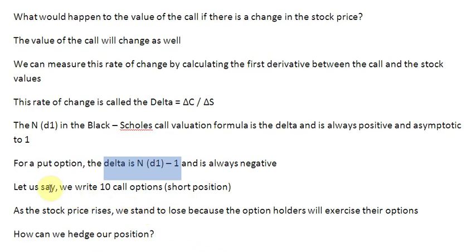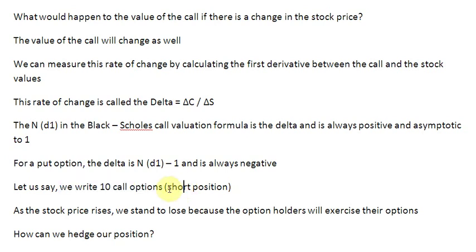Now let us assume a scenario where we are writing 10 call options. Writing means selling call options — that is, we are taking a short position. What is going to happen is that as the stock price rises, we are going to lose because the option holders are going to want to exercise their options by coming to us to buy this stock. Since this is going to be a loss-making situation for us, how can we hedge our position?